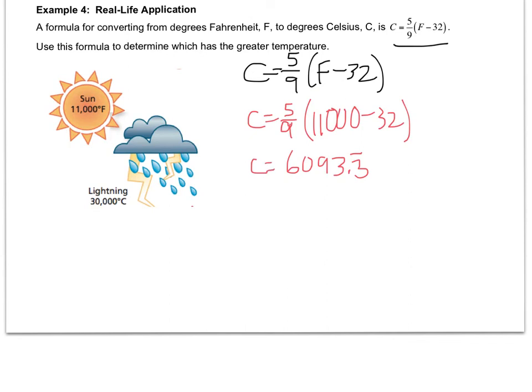And I know I told you to never use a repeating decimal, but I'm not using it as my answer. I'm just using it to estimate. And you can see that this is 6,000 and this is 30,000. So clearly, lightning is significantly greater in temperature.